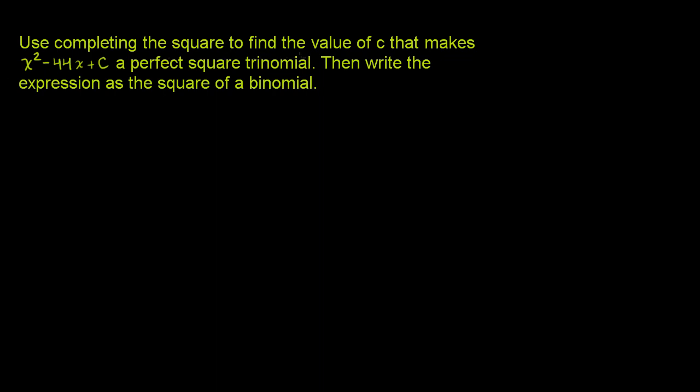Use completing the square to find the value of c that makes x² - 44x + c a perfect square trinomial. A trinomial is just a polynomial with three terms. Then write the expression as the square of a binomial.